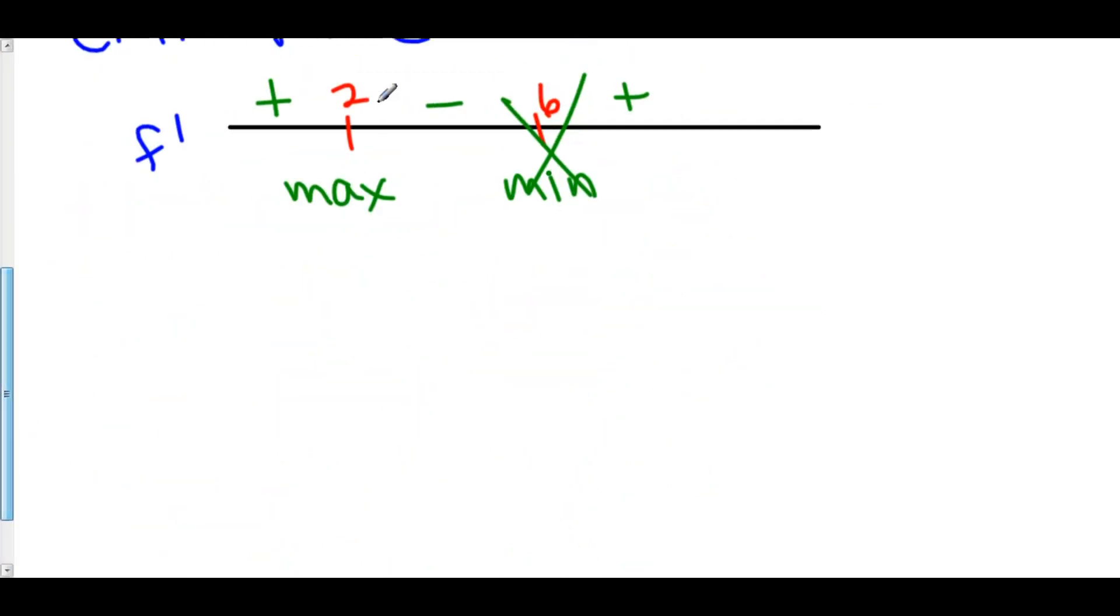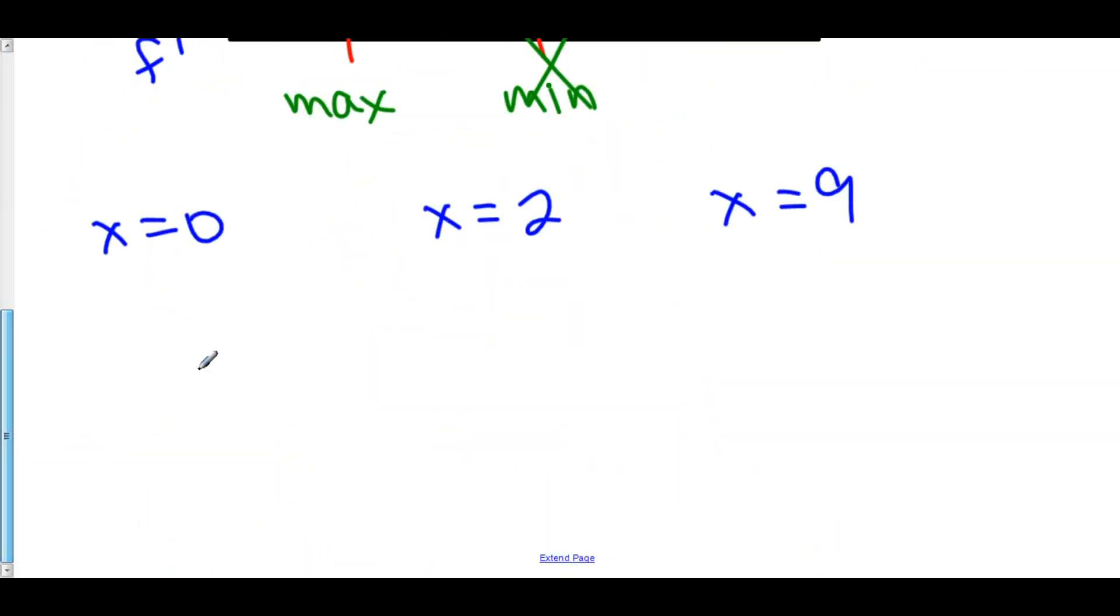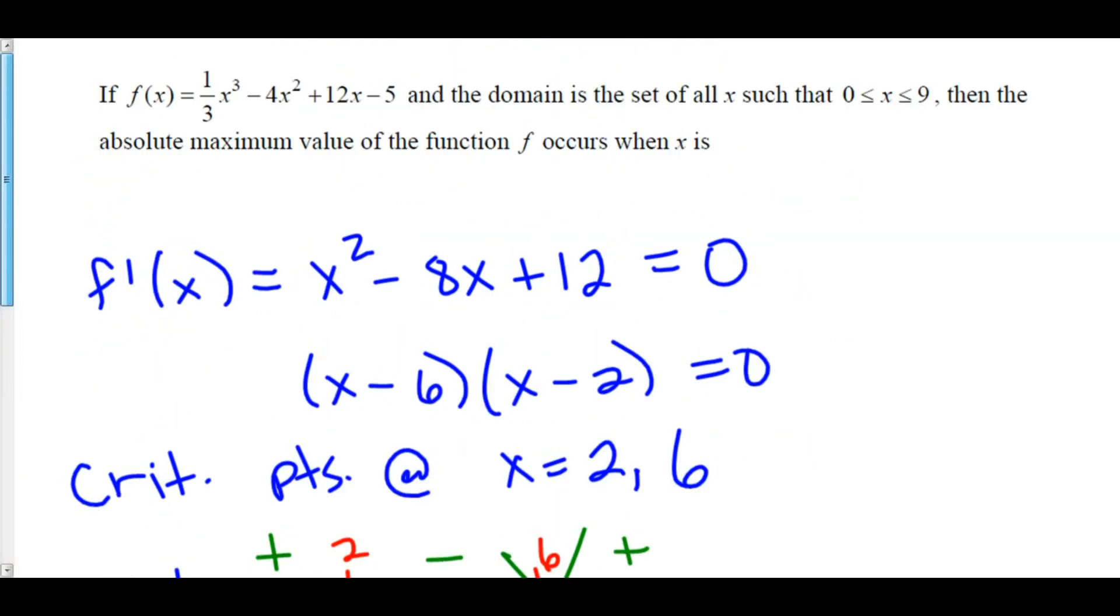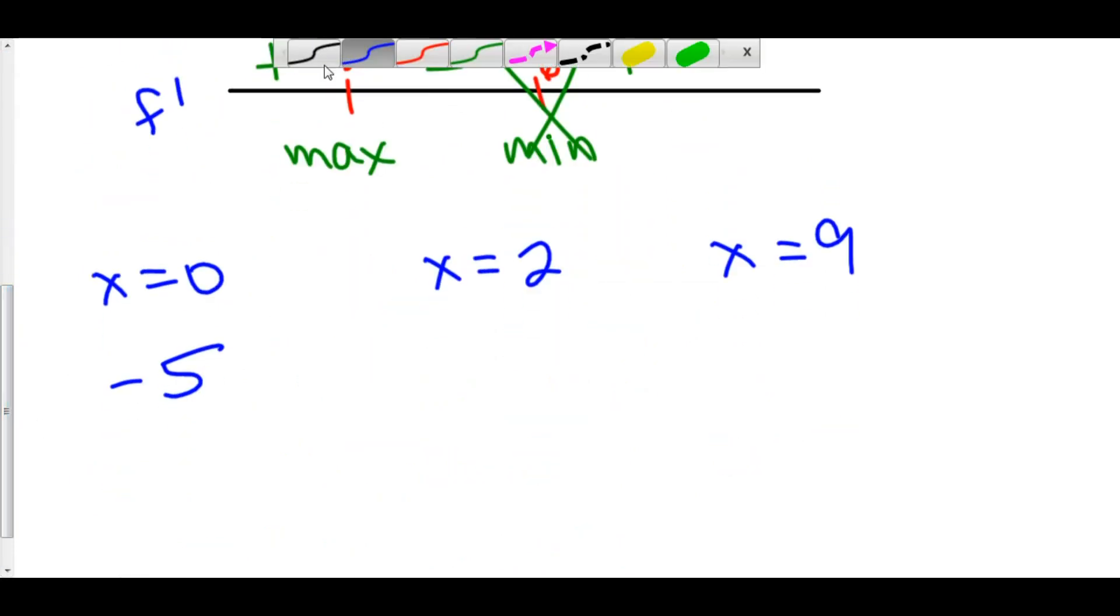So we've got some things that we've got to do. We've got x = 0 to inspect, x = 2 to inspect from our analysis, and x = 9 to inspect. If you plug in 0, you get -5. Let's plug x = 2 in. If you're to plug in x = 2, what you end up getting is 17/3.